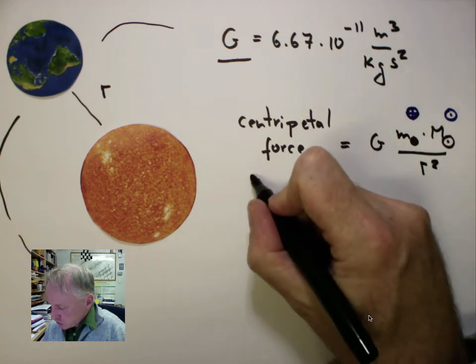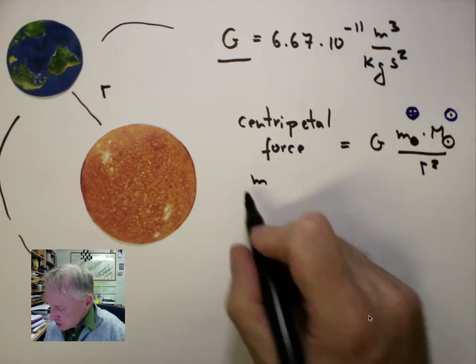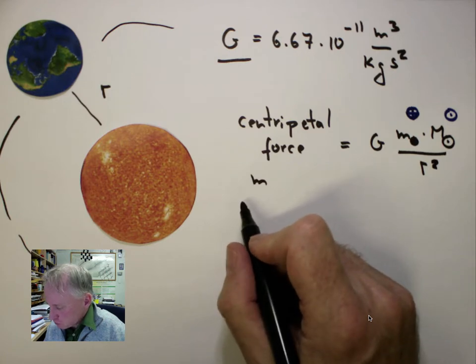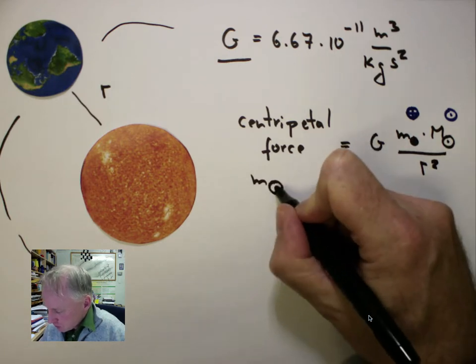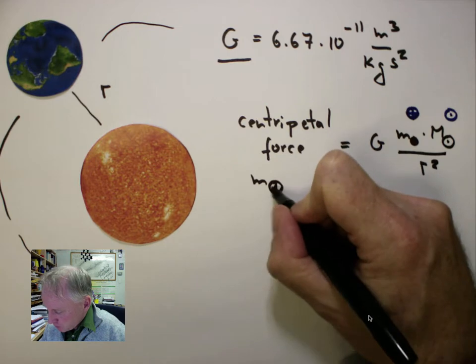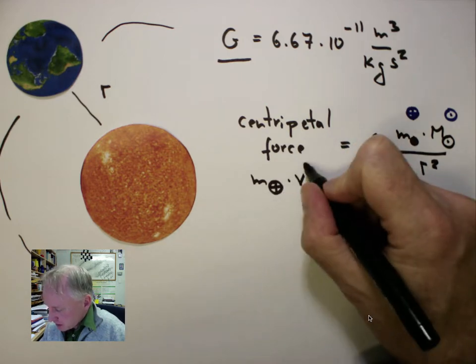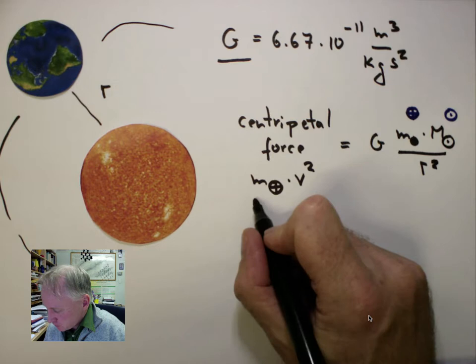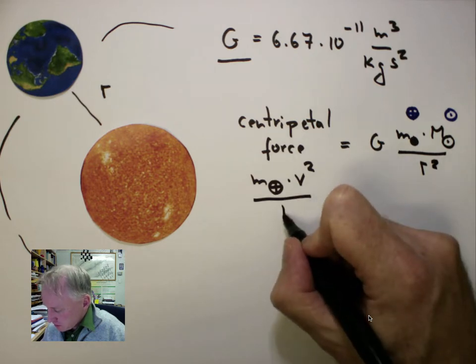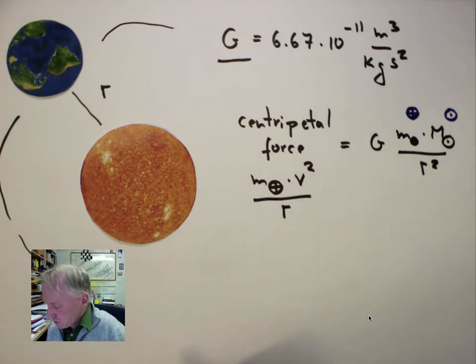We also know that, in general, centripetal force is mass of the moving object, which is the mass of the Earth, times its linear speed V squared, divided by the radius of the orbit.